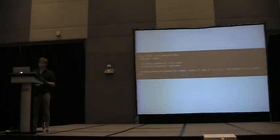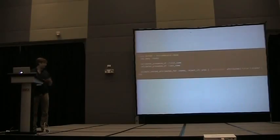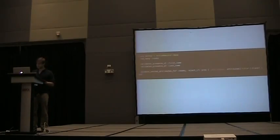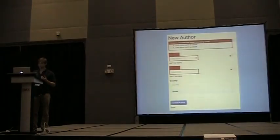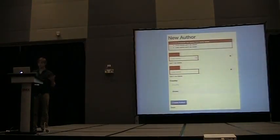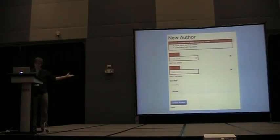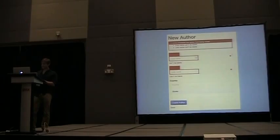To fix this, I can add an option to accepts_nested_attributes_for where I say reject_if, and if the attribute for title is blank, then it won't be able to submit. So once I add this and resubmit the form, well, it works. That's great. But where the heck are my book attributes? The fields for my books — they're just completely gone.